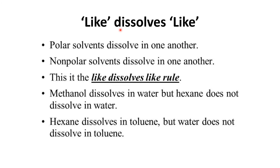This is a very important property of solubility: like dissolves like. This means that polar compounds are soluble in polar solvents and non-polar compounds are soluble in non-polar solvents. For example, methanol and water are both polar, so they dissolve in each other. On the other hand, hexane is non-polar, so it will not dissolve in water. Hexane dissolves in toluene because both are non-polar, but water does not dissolve in toluene because water is polar and toluene is non-polar.